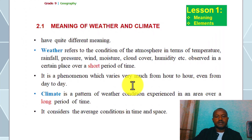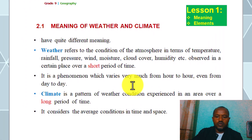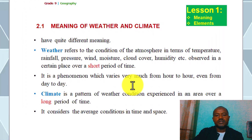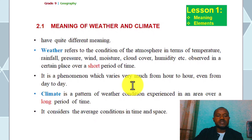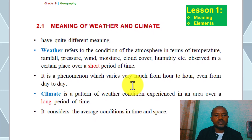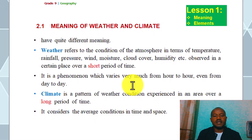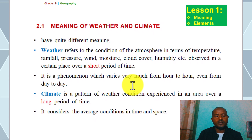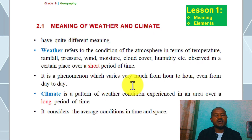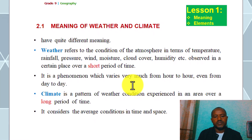This is the first lesson in Unit 2, which covers the meaning of weather and climate concepts. The elements of weather and climate have different meanings. The weather refers to the condition of the atmosphere in terms of temperature,